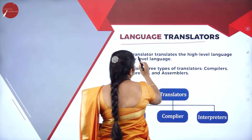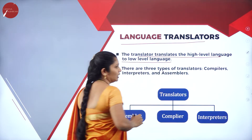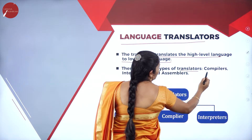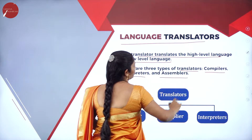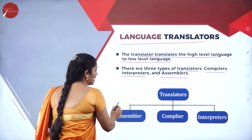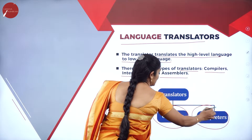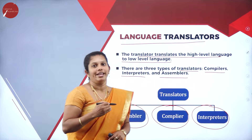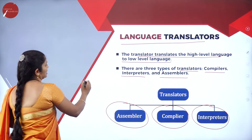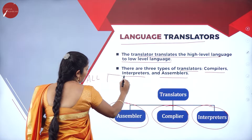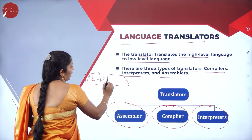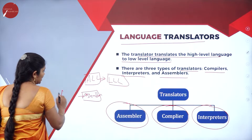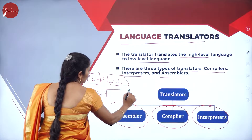The language translator translates the high-level language to low-level language — machine-level language or in the format of zeros and ones. There are three types of translator: one is compiler, interpreter, and one more is assembler. The first type is assembler, which helps to transfer assembly-level languages to machine-understandable languages. Assembler converts assembly-level language to low-level languages.